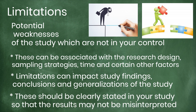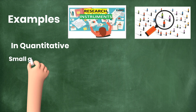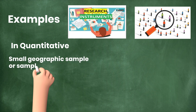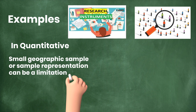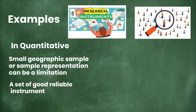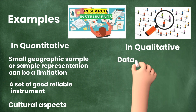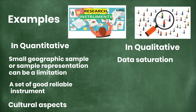So that the results may not be misinterpreted by the readers. For example, in quantitative research, small geographic sample or sample representation can be a limitation. A set of good reliable instruments can be a limitation in your quantitative research. Then some cultural aspects may also impact or be a limitation in your quantitative research.